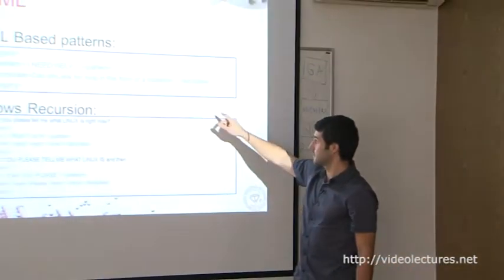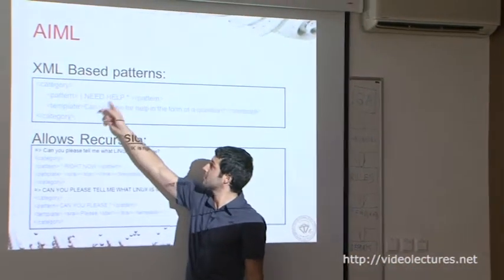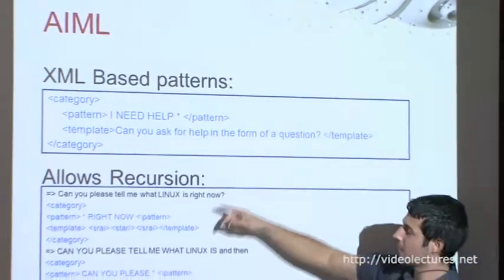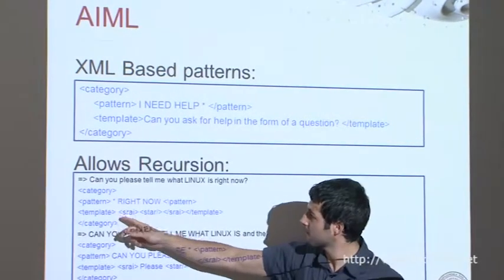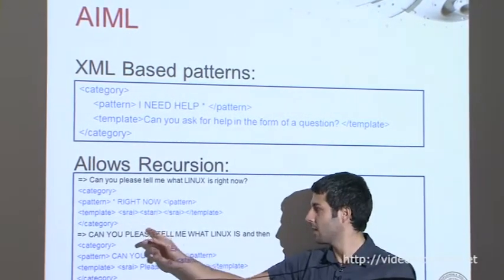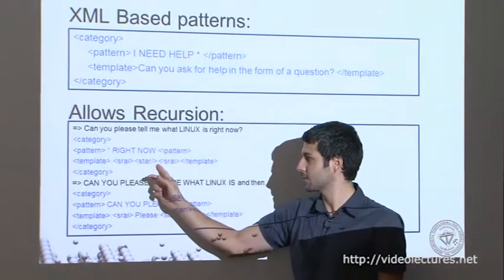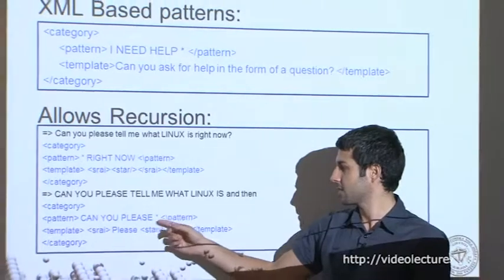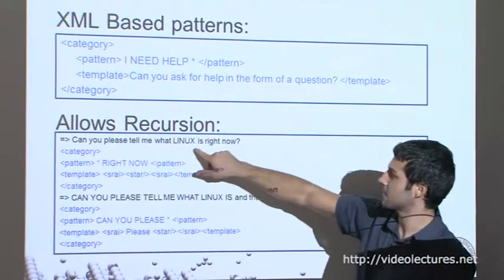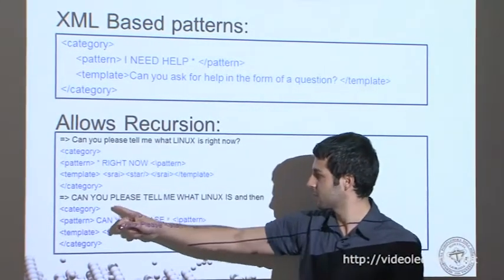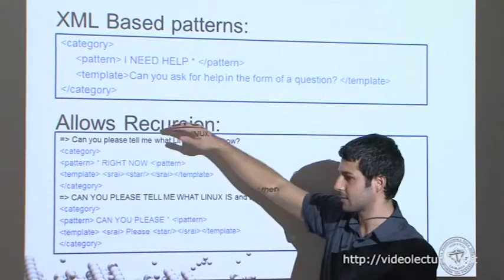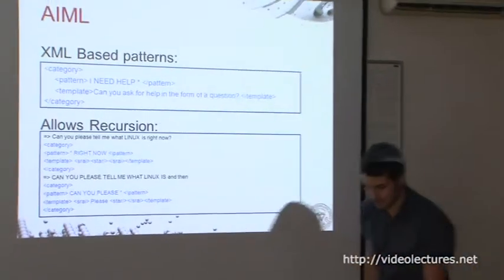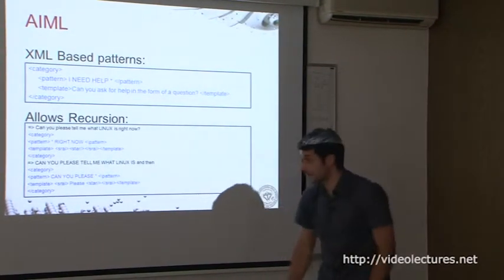I'll quickly explain AIML — it's really easy. For example, if you write 'I need help' and whatever follows, it will reply 'Can you ask for help?' It's a really simple script. The good thing is the recursion: if you say something, it can forward to itself, and then another pattern can take that. For example, the original statement was 'Can you please tell me what Linux is right now?' The pattern converts that to 'Can you please tell me what Linux is?' — removing extra words — then calls itself again and another pattern takes it. This is how it was easier to cover a lot of replies and responses.